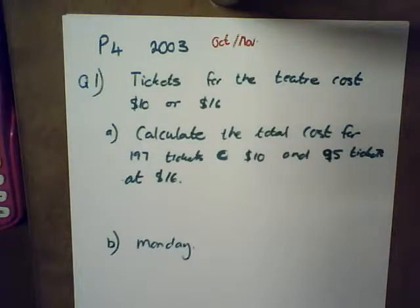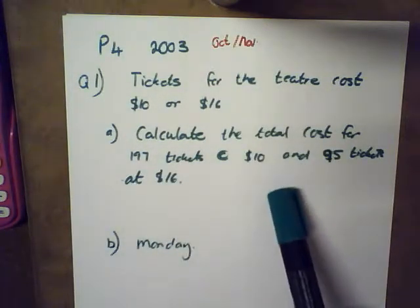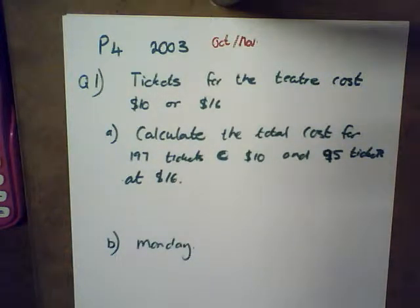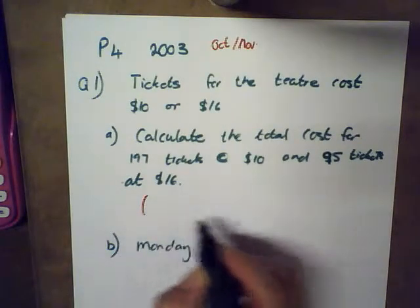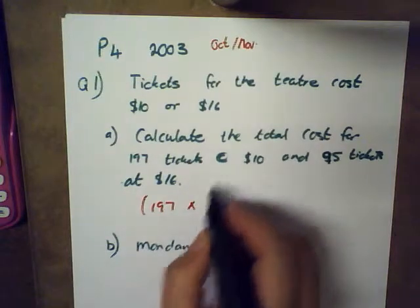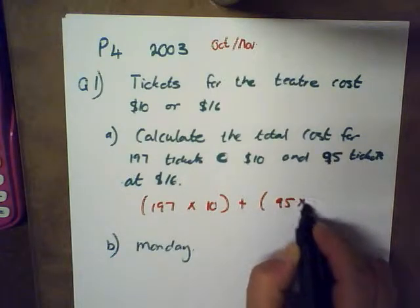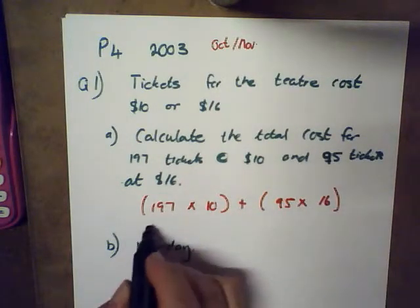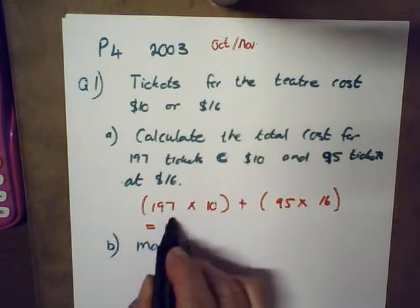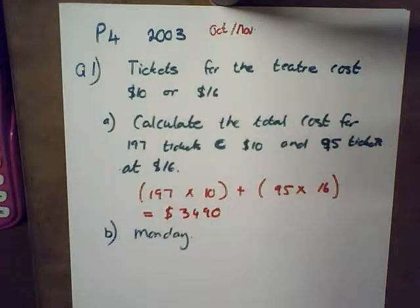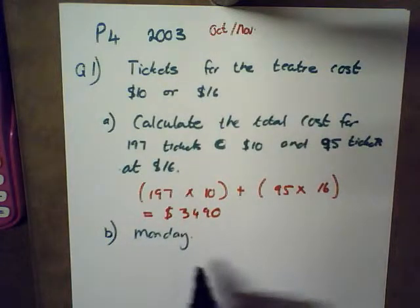The first question reads: tickets for the theater cost either $10 or $16. Calculate the total cost of 197 tickets at $10 each and 95 tickets at $16 each. So this is quite an easy problem — we'll just do 197 times 10 plus 95 times 16. If I do that calculation on my calculator I get $3490.